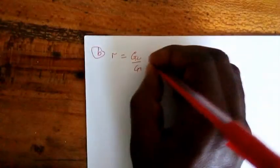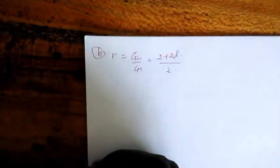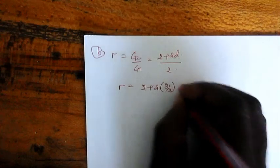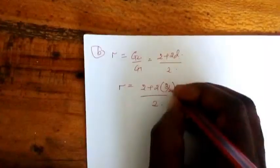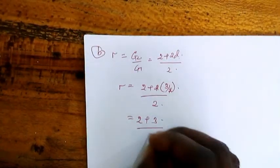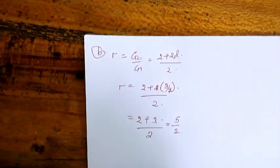For the first answer, we say common difference equals 3 over 2. But the second question is to find the common ratio. To find the common ratio, we must say that from the formula: common ratio, which is R, equals G2 over G1. But directly, G2 we found was 2 plus 2D over 2. Common difference we found is 3 over 2.